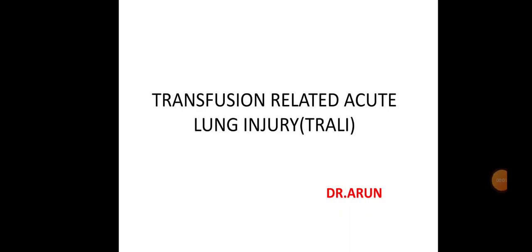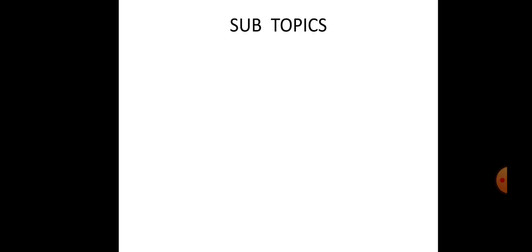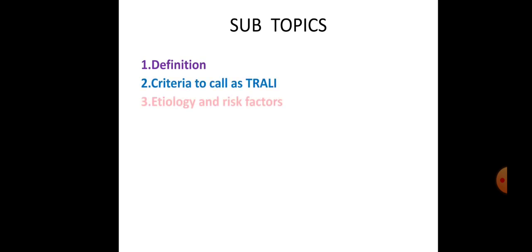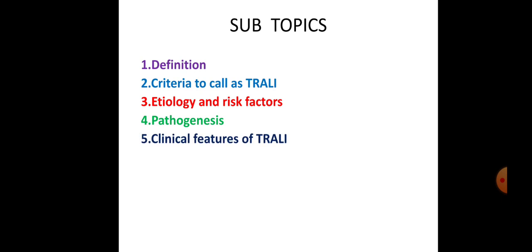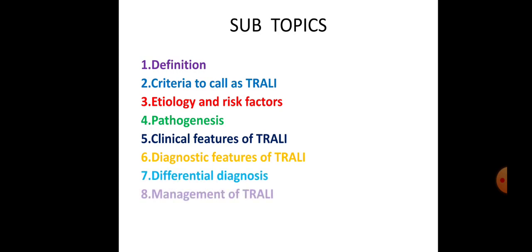Today's topic of discussion is Transfusion Related Acute Lung Injury, known as TRALI. We will discuss this topic under the following subheadings: definition, criteria to call it TRALI, etiology and risk factors, pathogenesis, clinical features, diagnostic features, differential diagnosis, management, and prevention of TRALI.